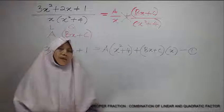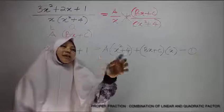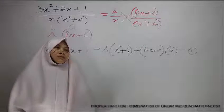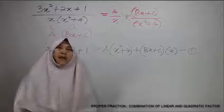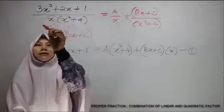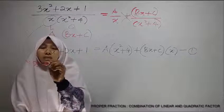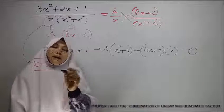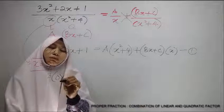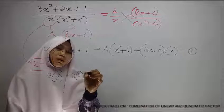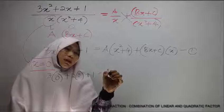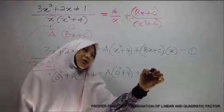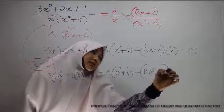Now, the concept is we want to find A, B, and C. If we want to find A, this whole term must be 0. So we need to substitute with the correct x value. Now, x value we take from the denominator, so equal to 0, and substitute this one into equation 1. So we will have 3 times 0 squared plus 2 times 0 plus 1 equals to A times 0 squared plus 4 plus B times 0 plus C times 0.